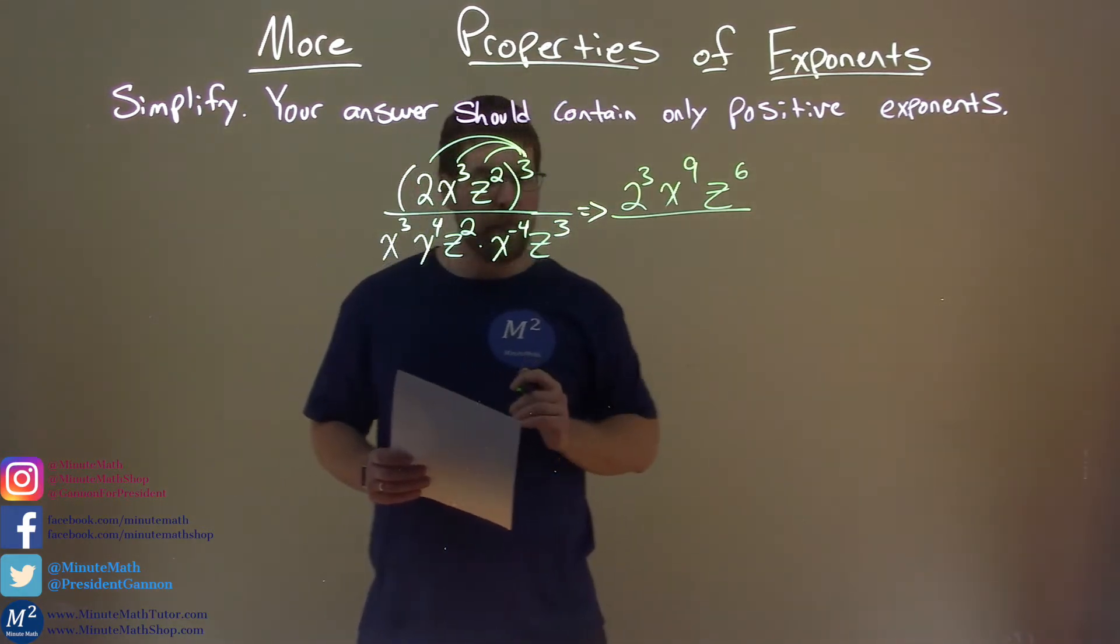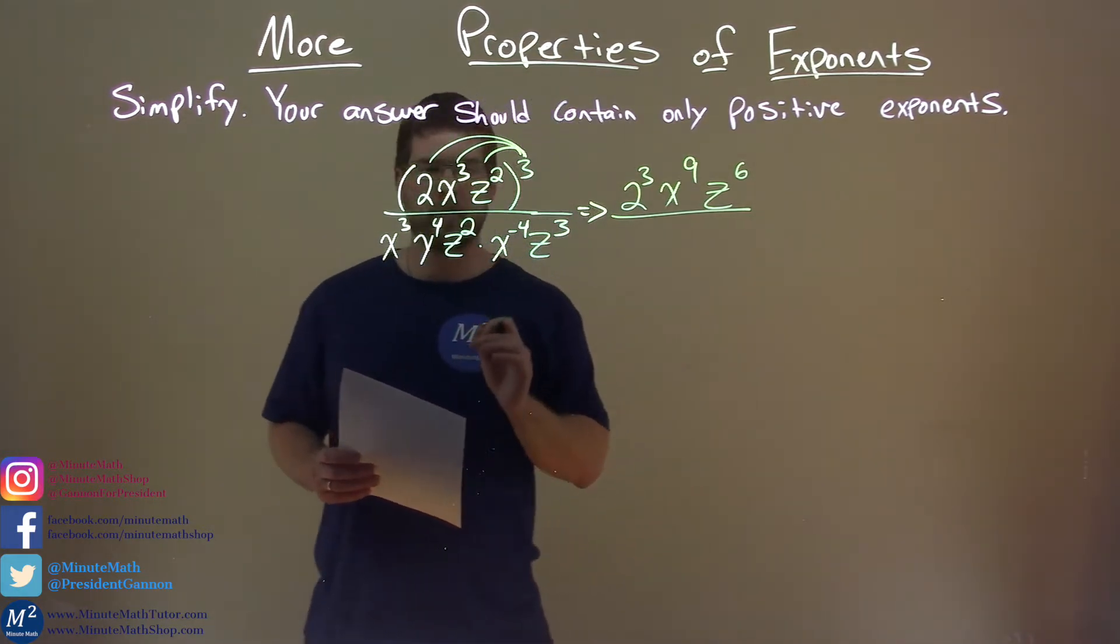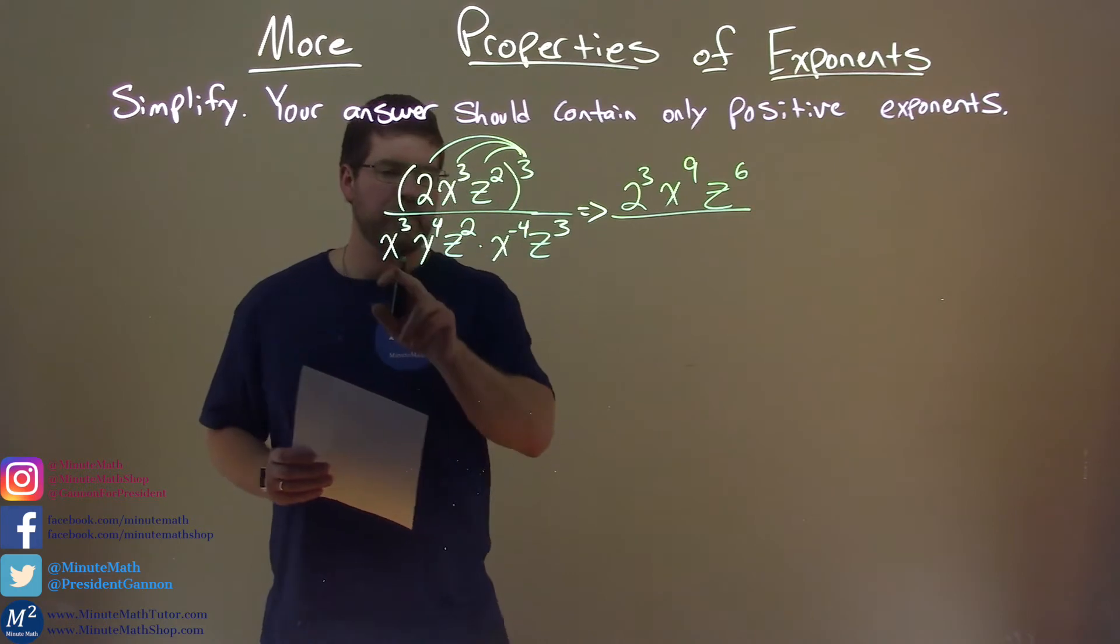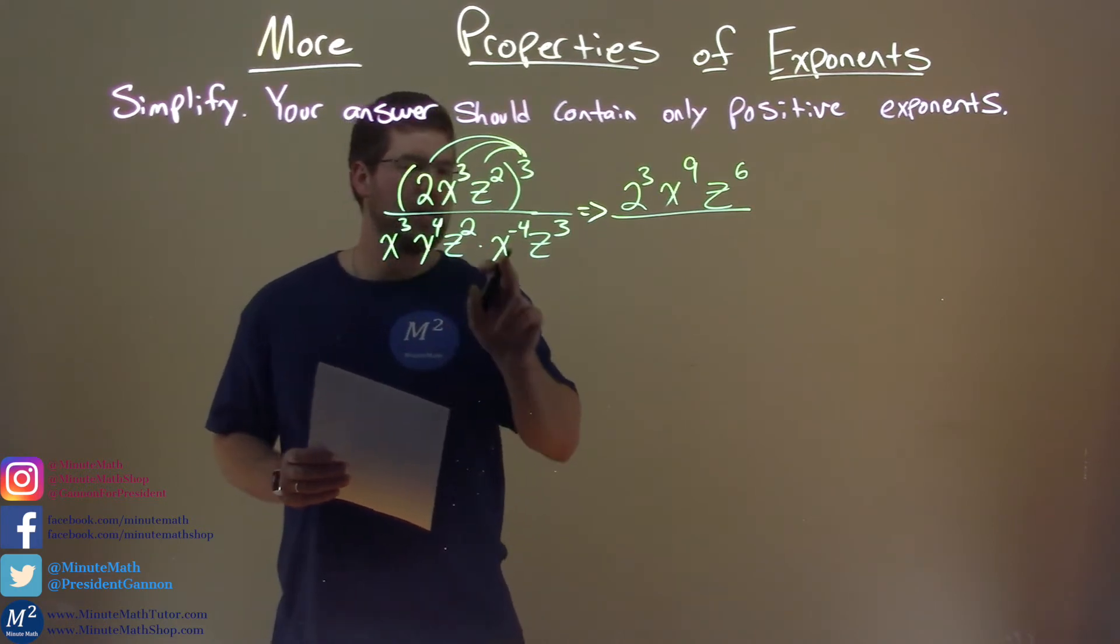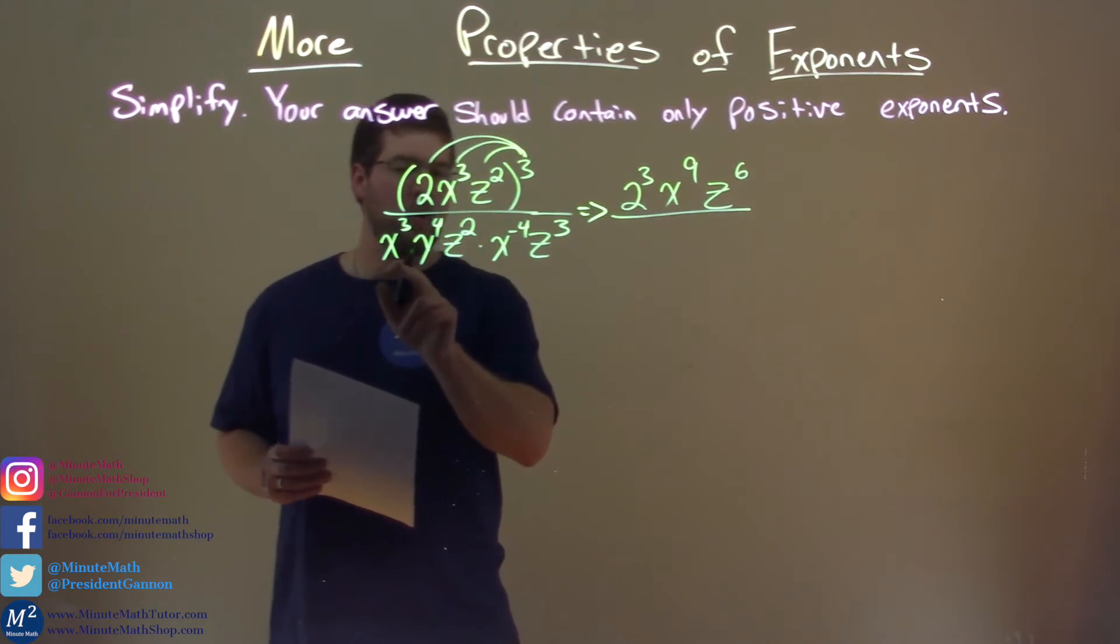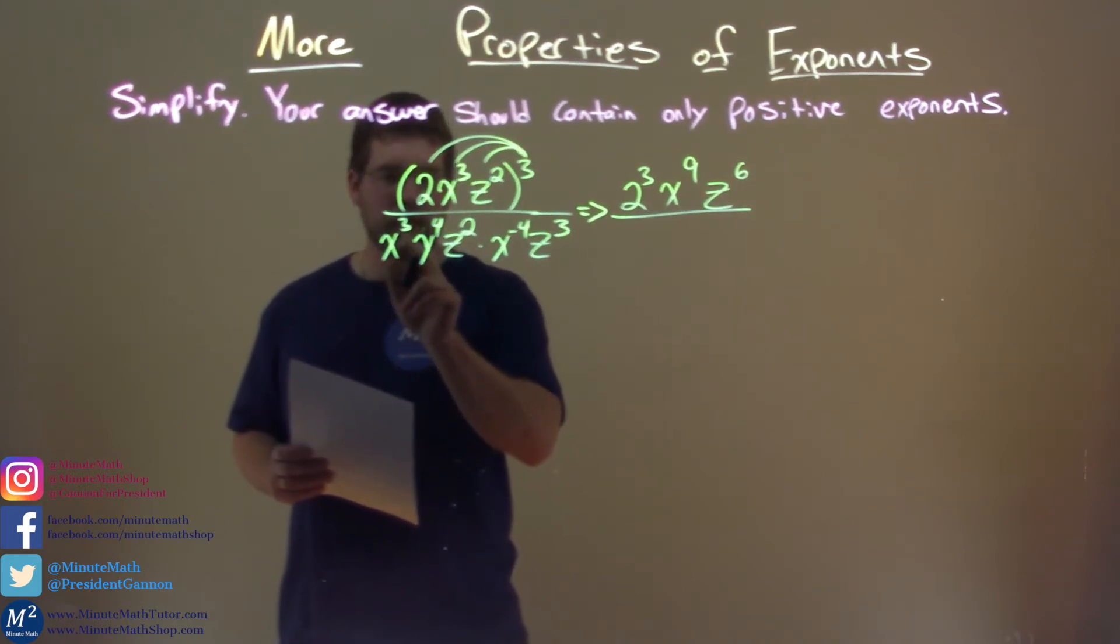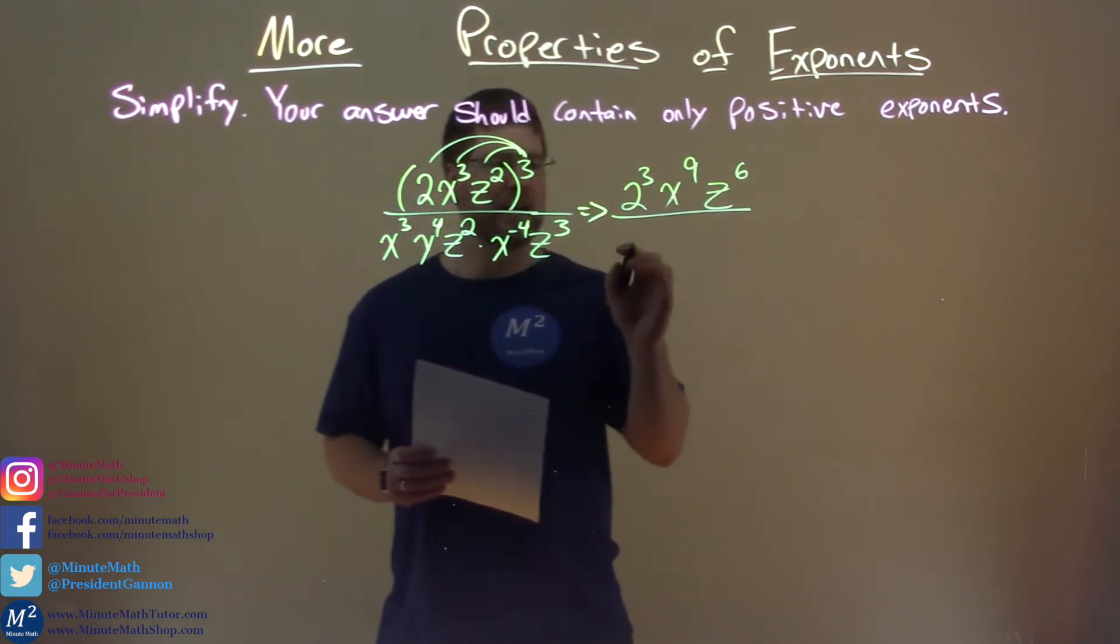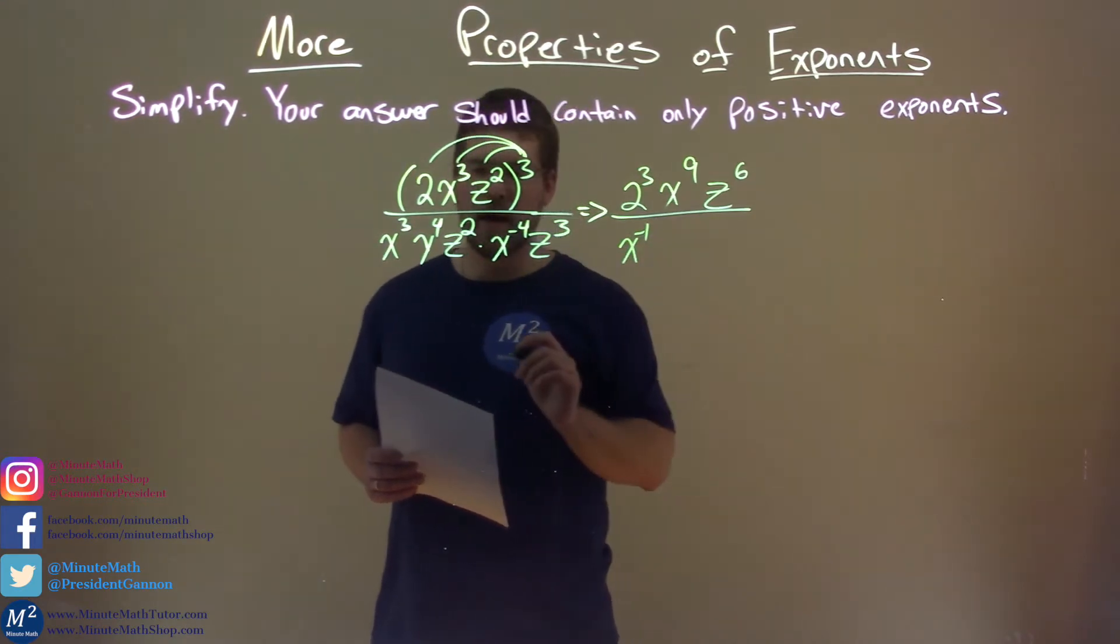Divided by the denominator we can simplify here. So, let's be careful. Our x is x to the third, and we have x to the negative four. When they're all being multiplied across, we add the exponents. So, 3 plus a negative four is x to the negative one power.